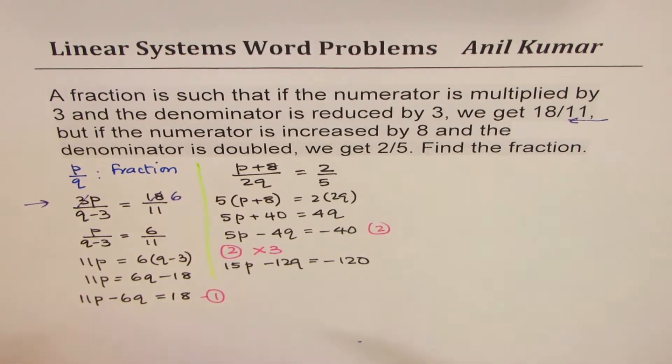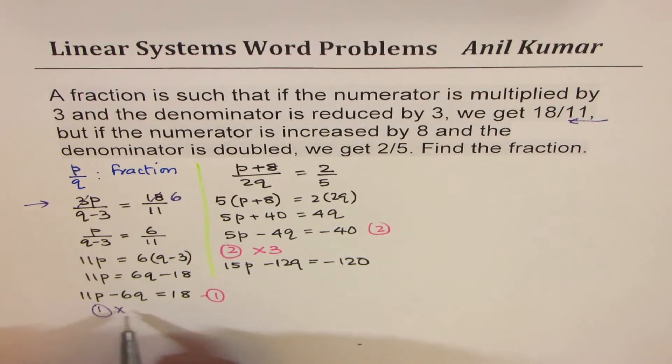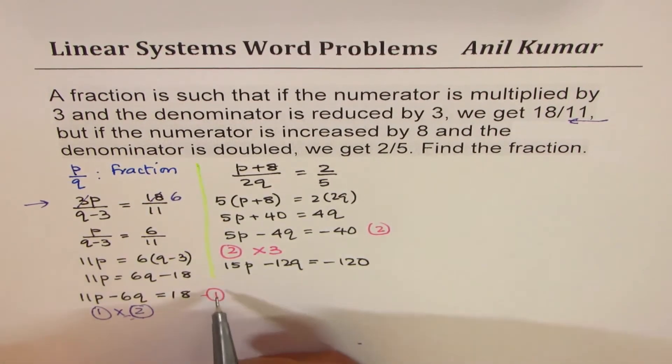So 3 times will give us 15p minus 12q equals to minus 120. Now on the other hand, if I multiply this by 2, so I'm writing equation 1 by 2. So I'm multiplying equation 1 by 2, I mean not the equation 1, just by number 2, and I'll write it here.